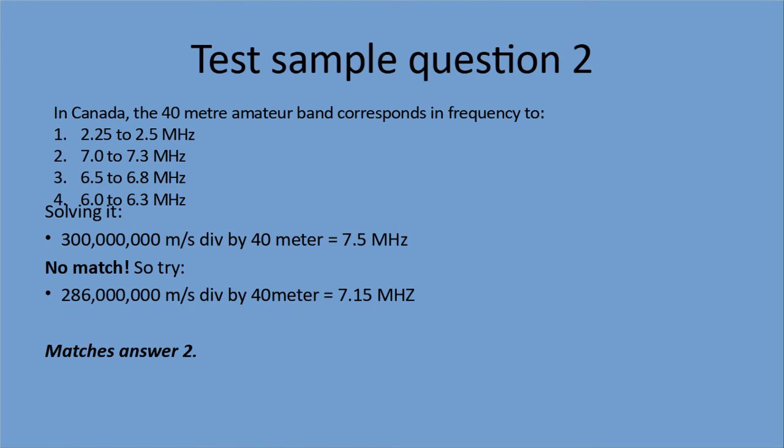Another one: in Canada, the 40-meter amateur band corresponds in frequency to which one? Let's solve it. 300 million divided by 40 meters is 7.5 megahertz — that doesn't match any of the answers. So let's go to step two: 286 million divided by 40 meters gives us 7.15 megahertz. That matches answer two — we're good to go.